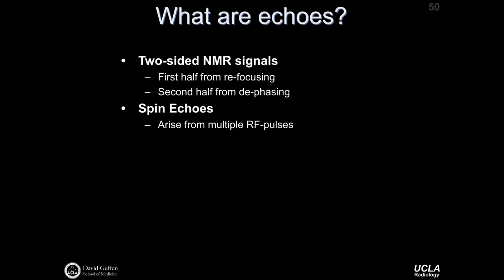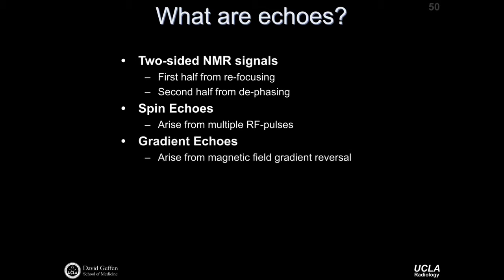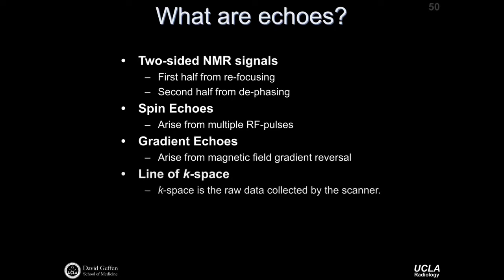Spin echoes arise from the application of multiple RF pulses, and that's what makes the spin echo distinct. Gradient echoes, on the other hand, arise from magnetic field gradient reversal. This lecture will focus mostly on spin echoes. You can also think of an echo as being a line of k-space, which is the raw data collected by the scanner. With every echo that we sample, we're able to fill in one line of our k-space data. There is a linear transformation, the Fourier Transform, that allows us to transform k-space data into image data.